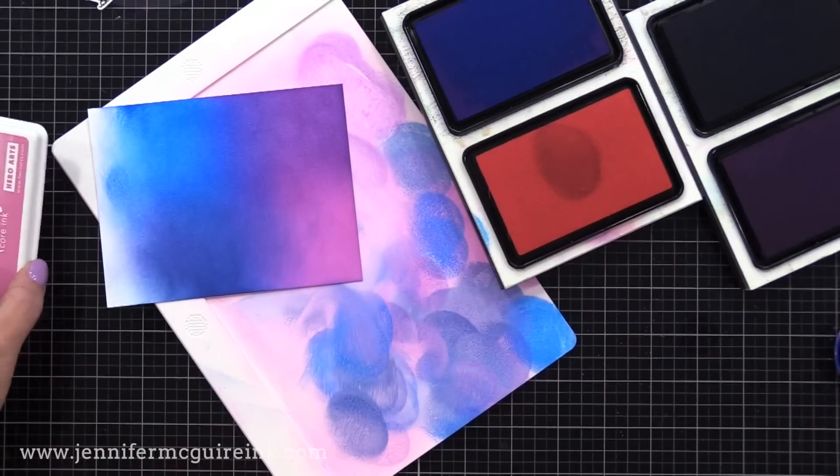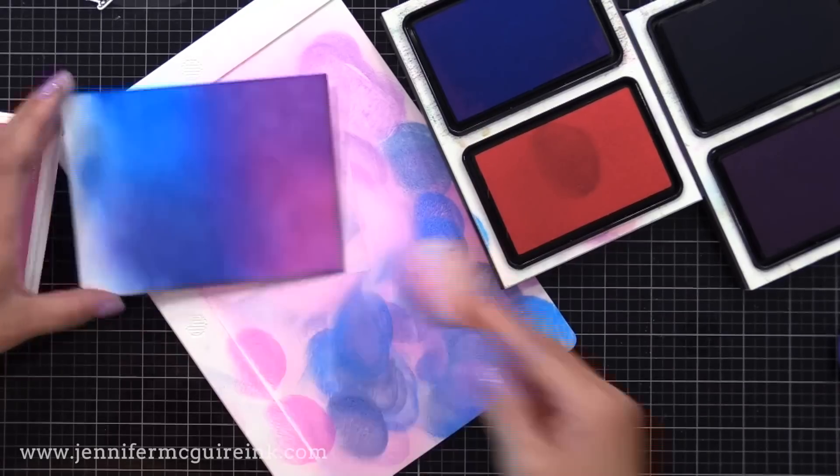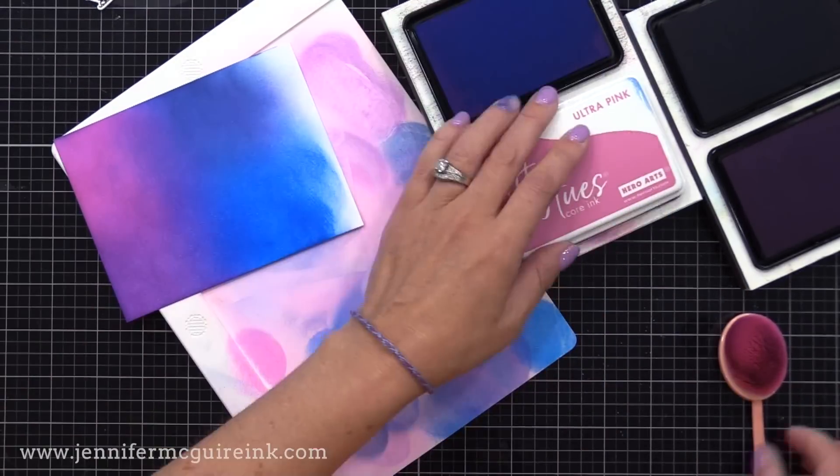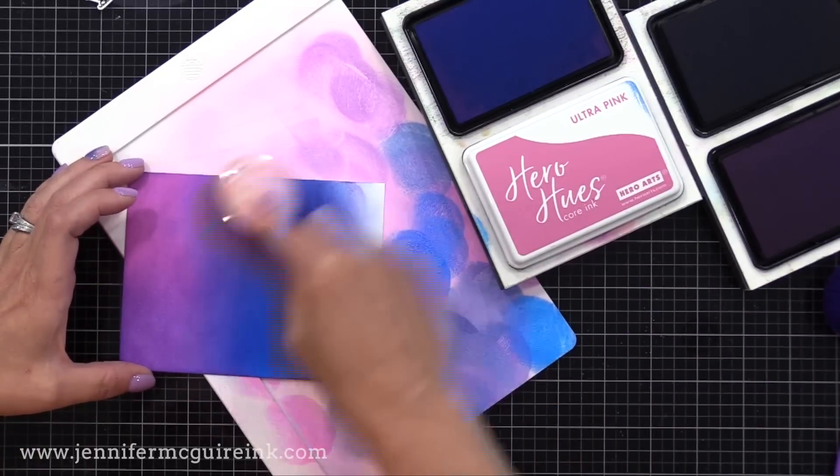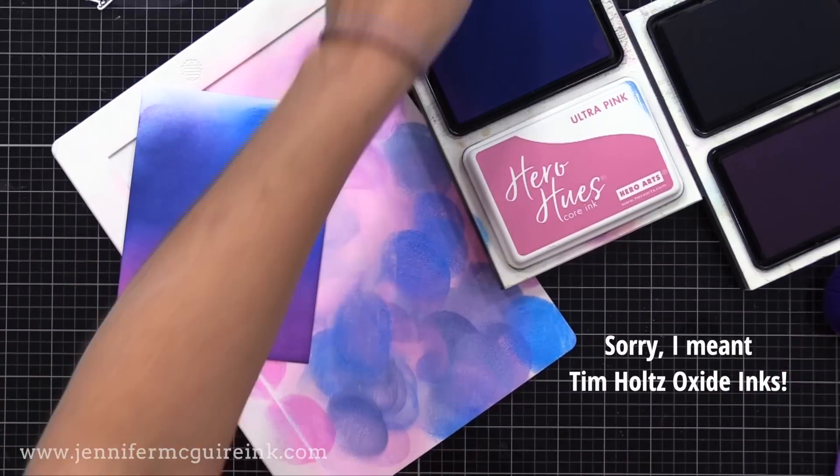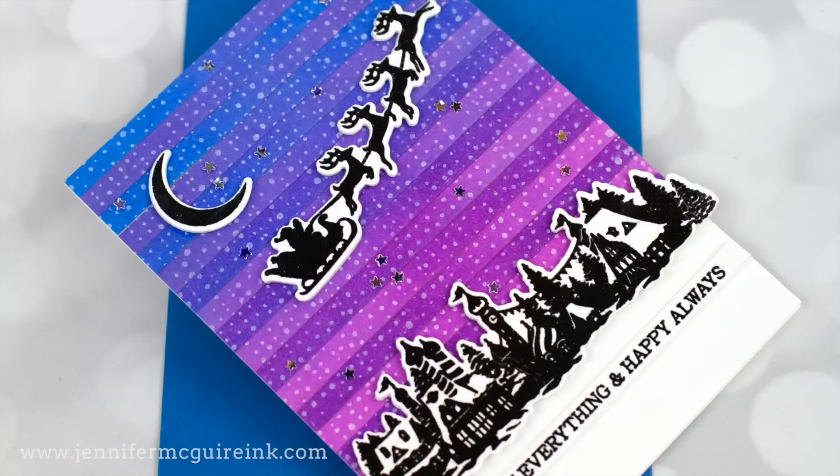This technique works best if you have kind of different areas of color, it makes it more dramatic. Notice I'm not doing a lot of blending here. I'm just putting down as much color as I want. You could go heavy or light, it doesn't matter at all. If you struggle with blending inks, I do recommend Hero Arts Oxide Inks. But you can do this technique with any dye ink as I did.